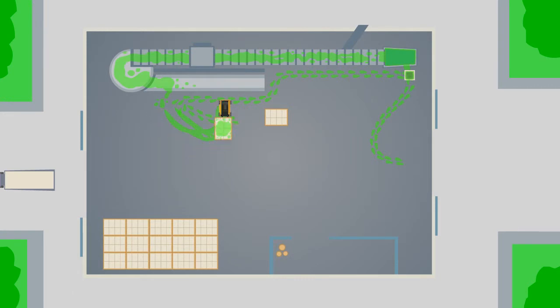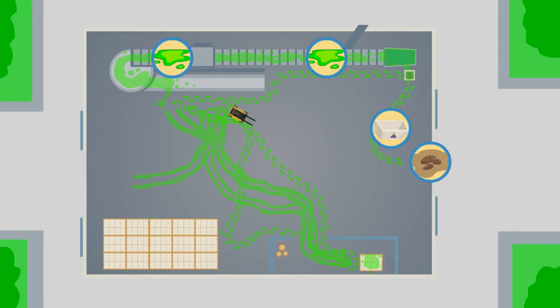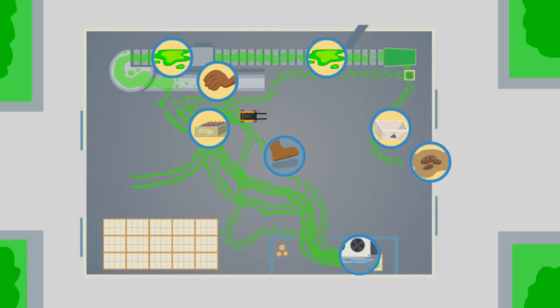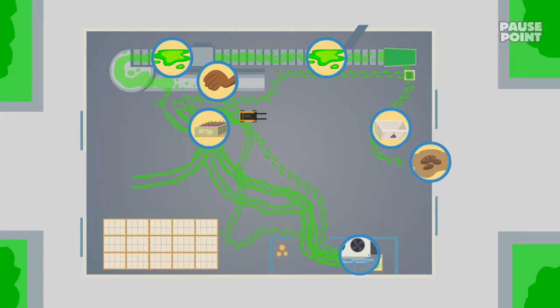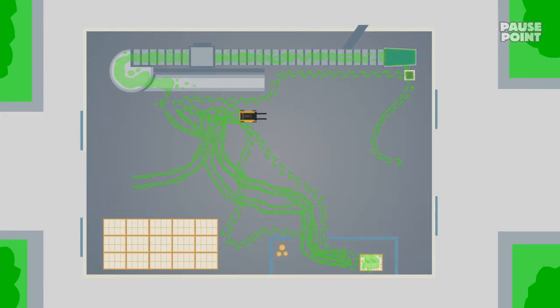While developing strategies for managing contamination, think of everything that may come into contact with your produce, even the things that will come in contact with the things that come in contact with your produce. Remember, prevention is within your power. When you understand your entire system, you can plan out how to avoid contamination.